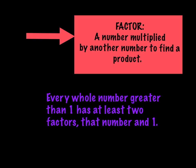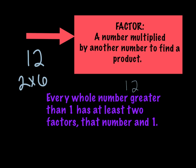First we need to understand what a factor is. A factor is a number that's multiplied by another number to find a product. Remember, product just means the answer to a multiplication problem. So if I had the number 12, I know that 2 times 6 equals 12, so 2 and 6 would be the factors of 12 — those are the two numbers that I multiply together to find 12.